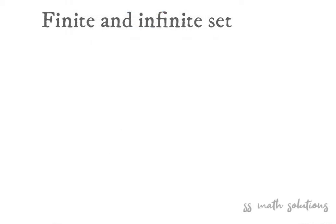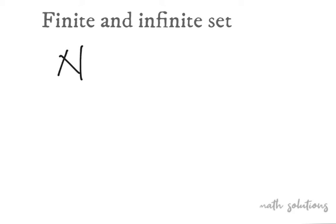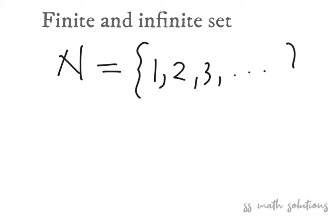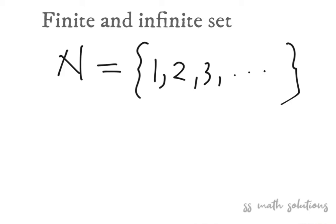A set is finite if it is either empty or consists of a definite number of elements. If neither of these is the case, then the set is infinite. For example, N — the set of natural numbers — is written as {1, 2, 3, ...} and goes on infinitely. Also, let G be the set of points on a line — that is also an infinite set, since there are infinitely many points on a line.